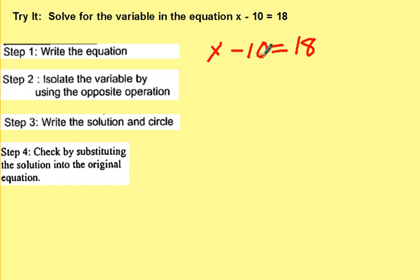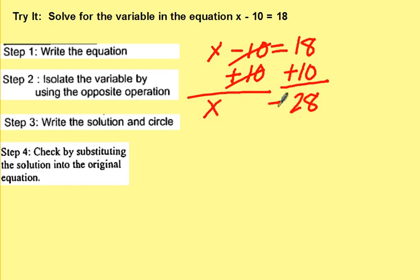x is being subtracted by 10, so we want to add 10 on both sides. That allows us to have the x all by itself. Positive 10 and negative 10 will cancel. x will be on this side by itself. 18 plus 10 is 28. And bring down your equal sign.